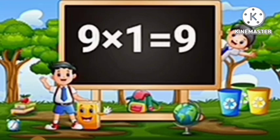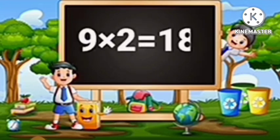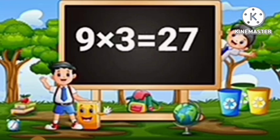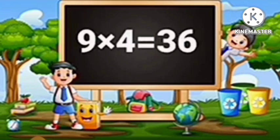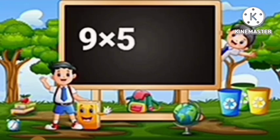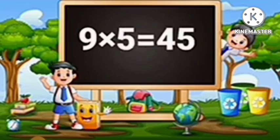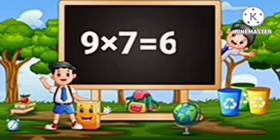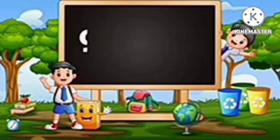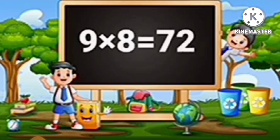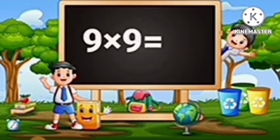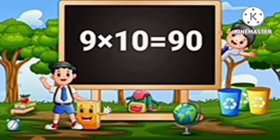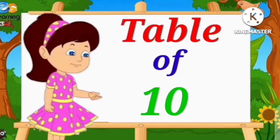Table of Nine. Nine ones are nine. Nine twos are eighteen. Nine threes are twenty-seven. Nine fours are thirty-six. Nine fives are forty-five. Nine sixes are fifty-four. Nine sevens are sixty-three. Nine eights are seventy-two. Nine nines are eighty-one. Nine tens are ninety.